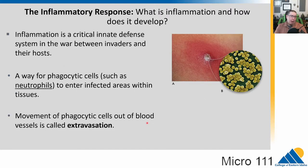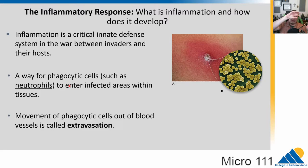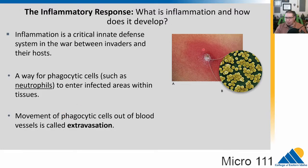So what is inflammation and how does it develop? Inflammation is a critical part of the innate system. When microbes get in, it is a way to allow phagocytic cells such as neutrophils to enter the infected tissue. We have things like neutrophils floating around in the blood system, but we need to get them to the site of a wound. The movement of these phagocytic cells out of the blood vessels and to the site of the wound is called extravasation — 'extra' meaning moving outside of, and 'vaso' being the vascular system.